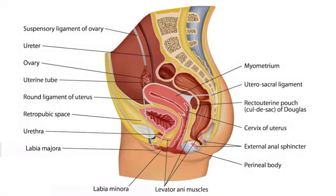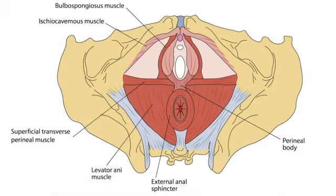Looking again at our sagittal view, we can see the external anal sphincter right here. If the rectum is protruding anteriorly in pelvic organ prolapse, the external anal sphincter cannot perform its proper function. Here is an inferior view of the pelvis with the external anal sphincter labeled. If there's a rectocele — pelvic organ prolapse — this sphincter will be weak.